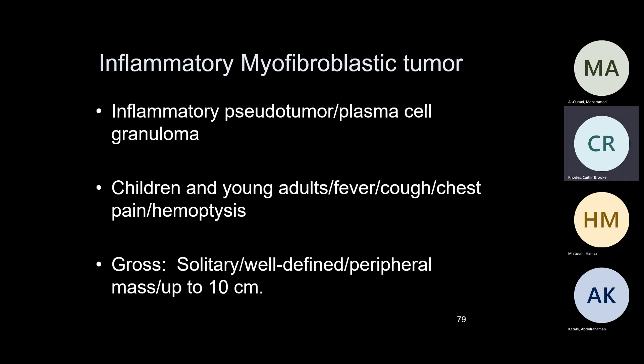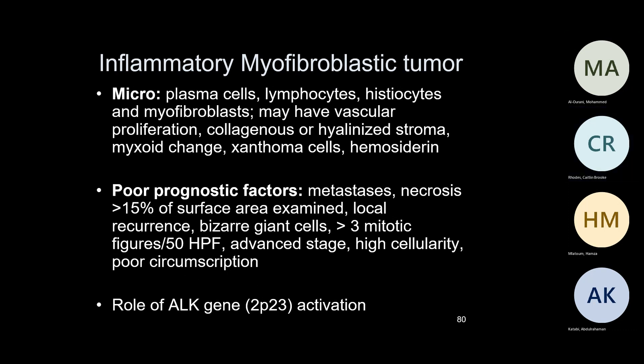Inflammatory myofibroblastic tumor — also called inflammatory pseudotumor or plasma cell granuloma — these are misnomers. Usually in young patients with fever, cough, chest pain, and elevated hemoglobin. It can grow up to 10 centimeters in size. Under microscopy, you see plasma cells, lymphocytes, and other inflammatory cells and fibroblasts. These are classified under benign tumors. Poor prognostic factors include large tumor size, metastasis to other areas, a lot of necrosis, and mitotic figures.